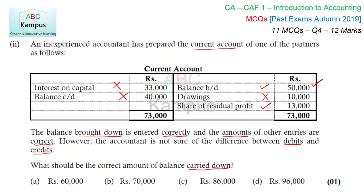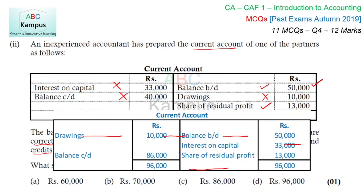When we correct these entries, we will get the correct balance. Let's illustrate the proper current account. Interest on capital and drawings have been moved to the correct (credit) side. Automatically, the balance carried down calculated is correct. Option C would be our answer.